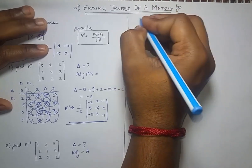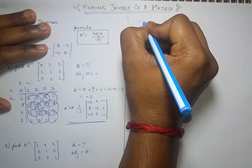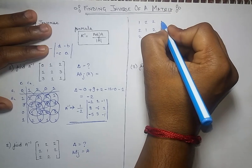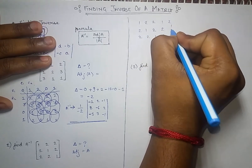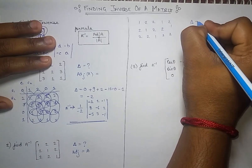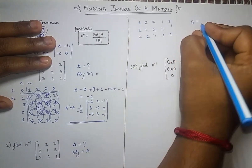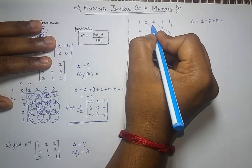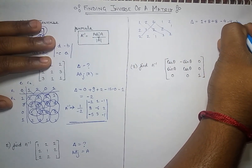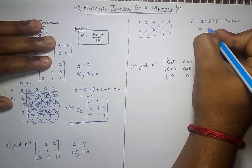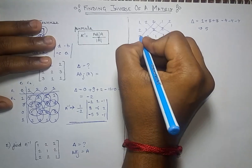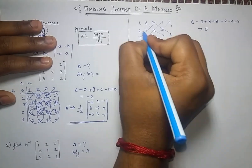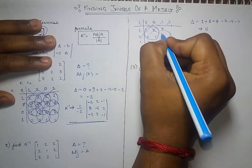For the second question, the matrix is [1, 2, 2; 2, 1, 2; 2, 2, 1]. Write it down and append the first two columns: 1, 2, 2, 1 and 2, 1. Find the determinant by multiplying diagonals: positive terms give 1 plus 8 plus 8, negative terms give 4 plus 4 plus 4, so the determinant is 5.